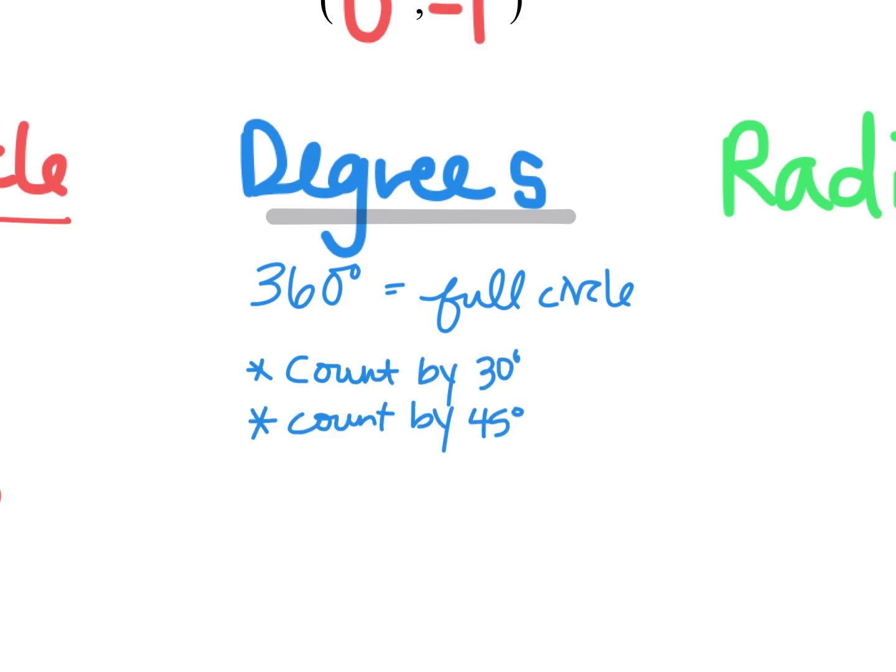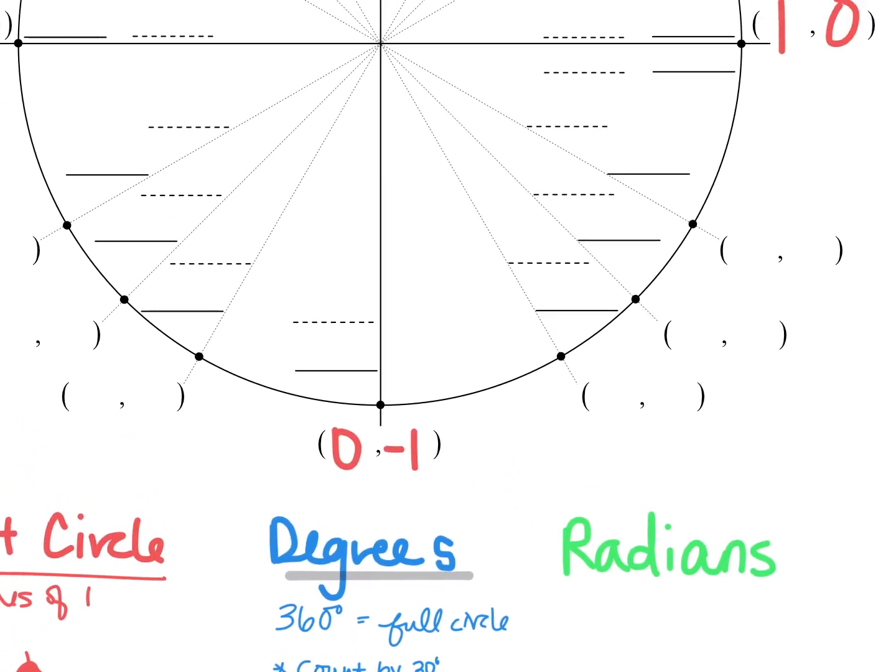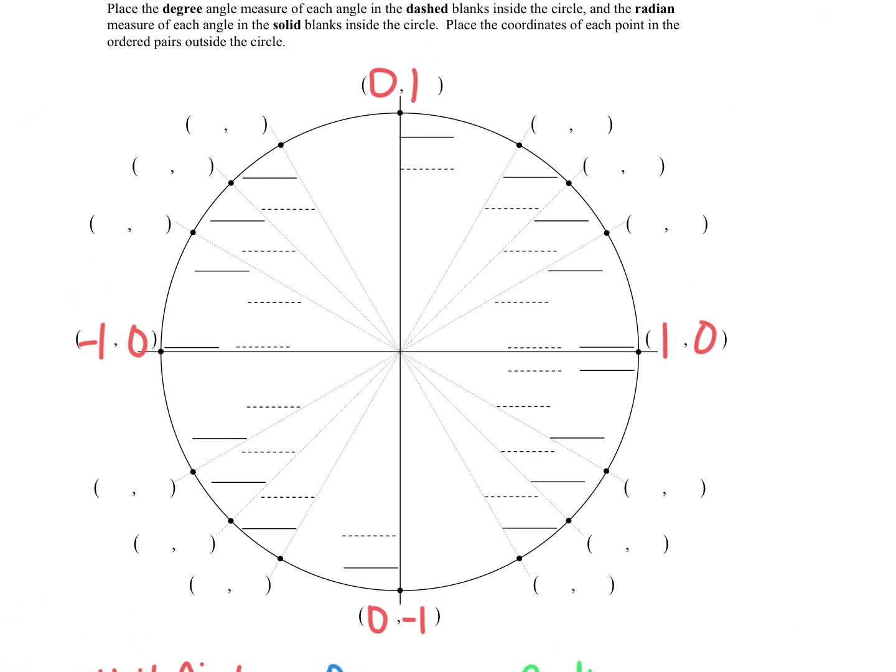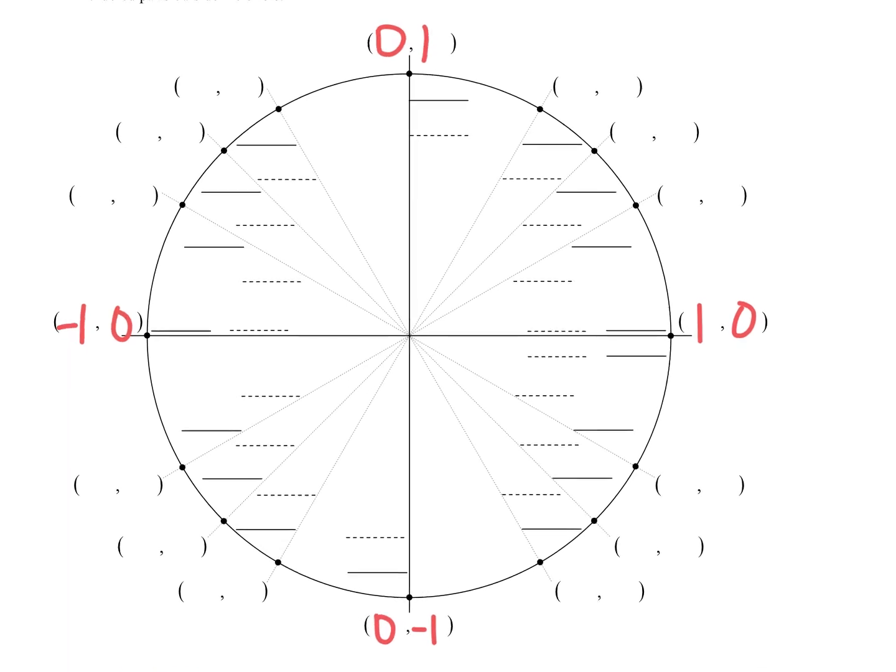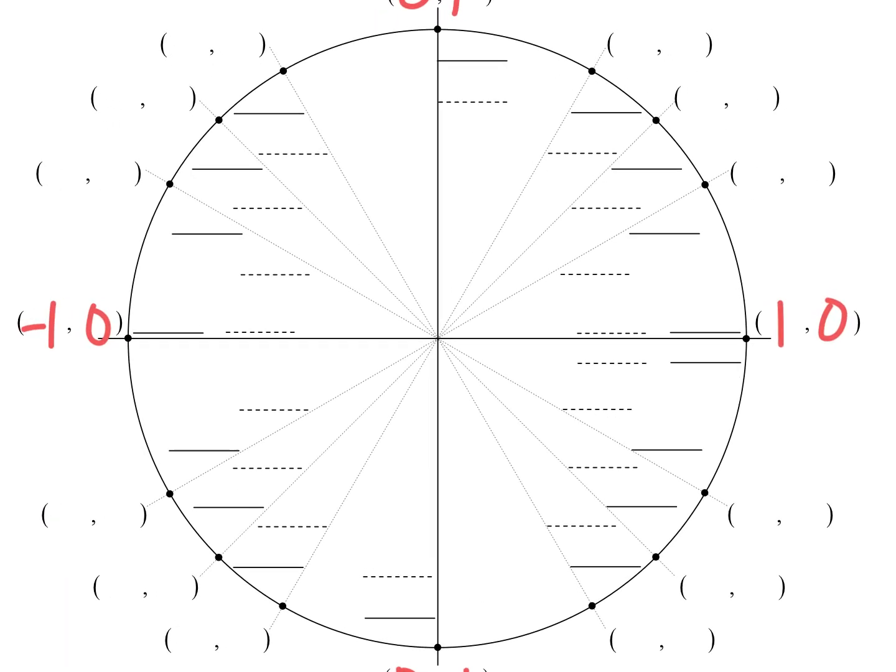Okay so now that you have those written down because you will need those reminders I promise. Let's zoom out and look at our circle. I believe the directions say we can put degrees on the dash line so that's what I'm going to do.